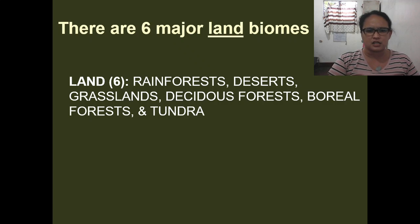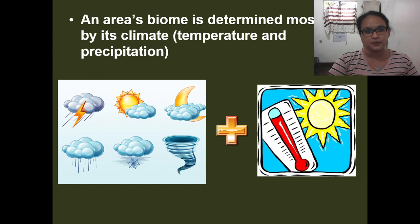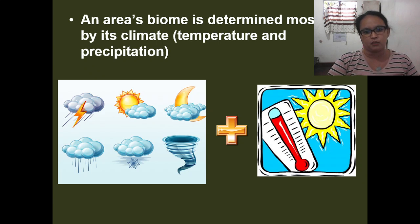So what are the differences of these six major biomes? A biome is determined mostly by its climate. Climate is a combination of temperature and precipitation. This is a very important variable in determining what kinds of biomes exist on our planet.